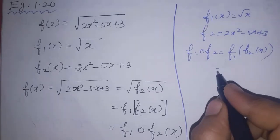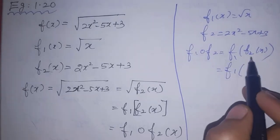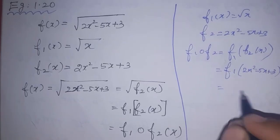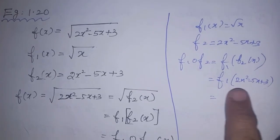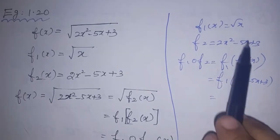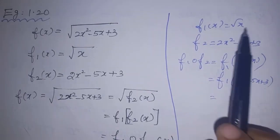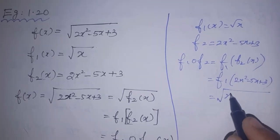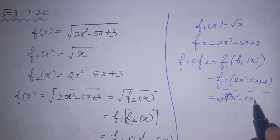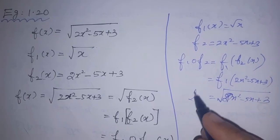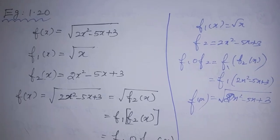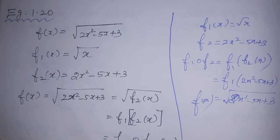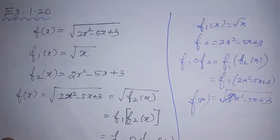Now for example 1.20, the meaning is f1 of this function is f2, that is 2x squared minus 5x plus 3. f1 maps x to x, and then you get the root of 2x squared minus 5x plus 3. This is nothing but f of x. This is called a composition function — with an inner function and an outer function. If you go from x, then you can tell the answer to x.